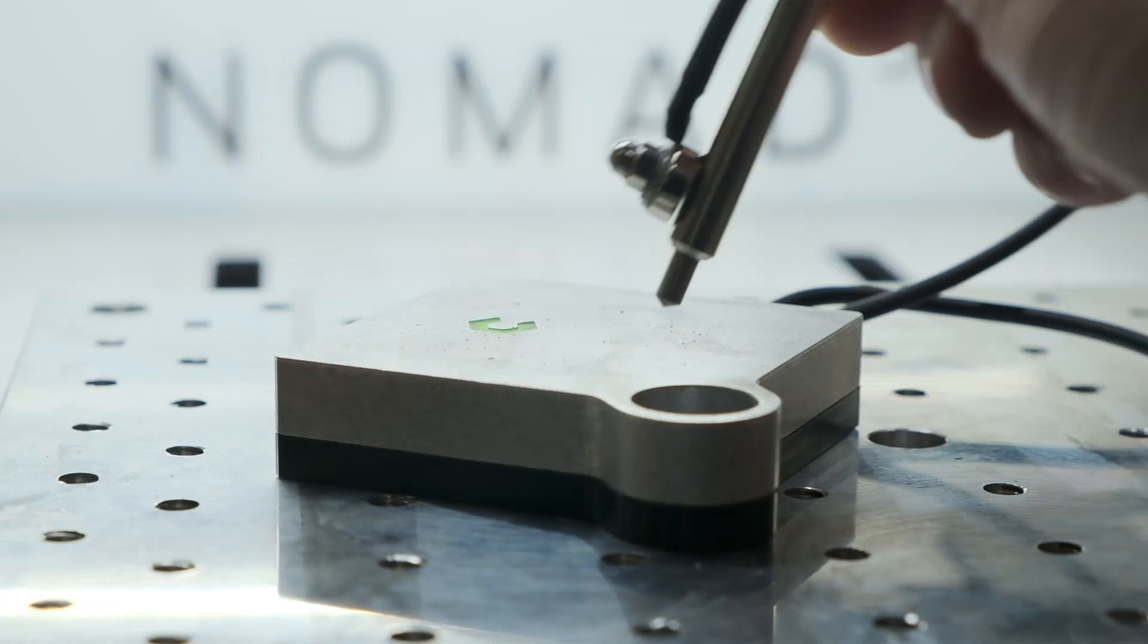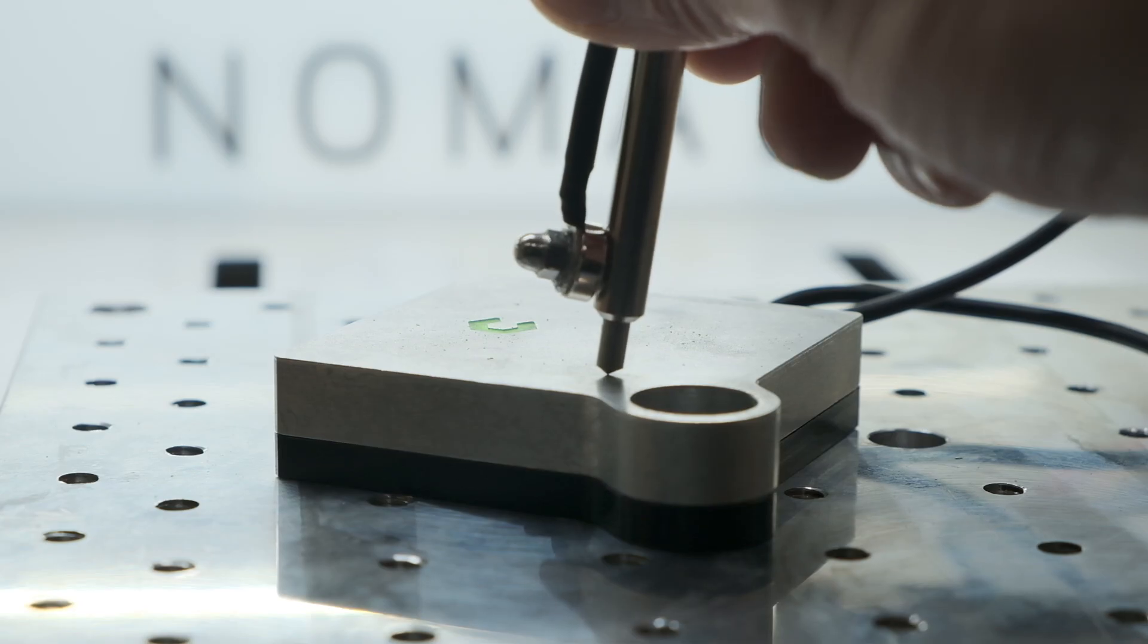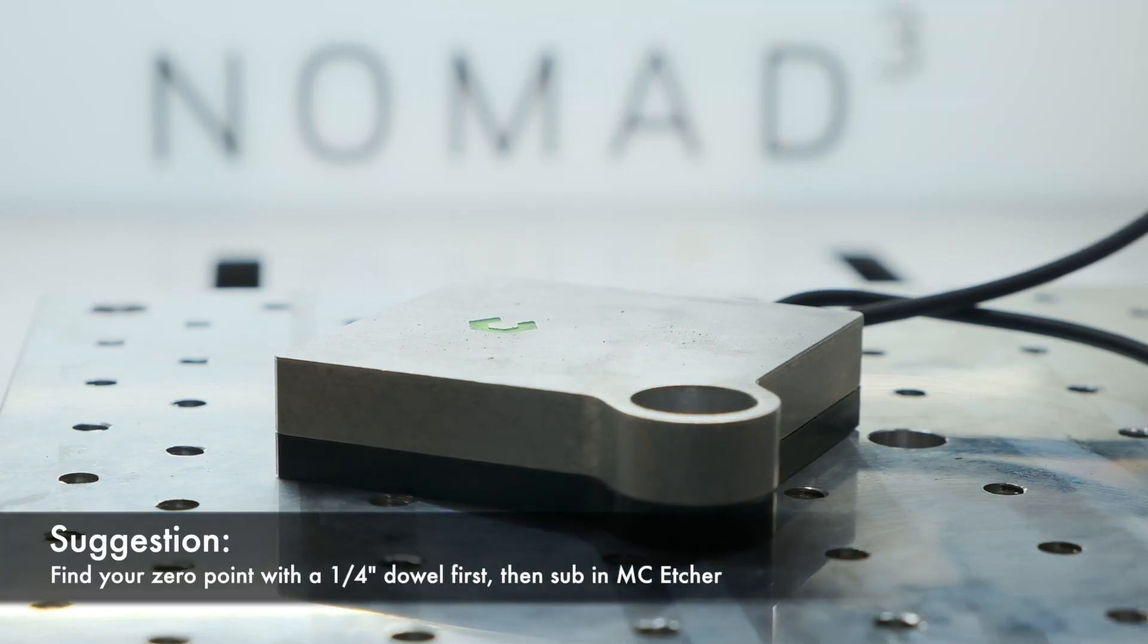And note number three is that MC Etcher should not be used with a conductive probing solution like our Bit Zero. The diamond tip is not electrically conductive.